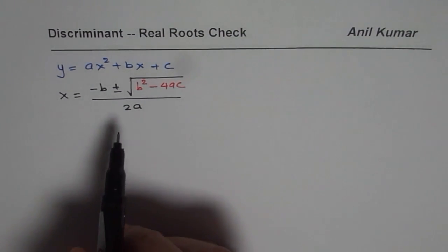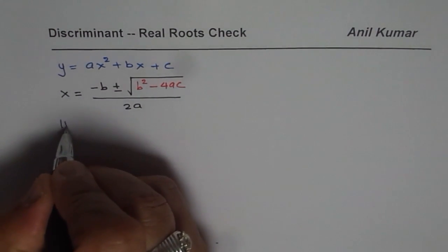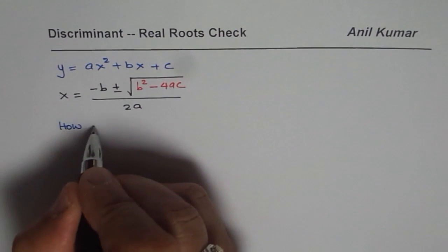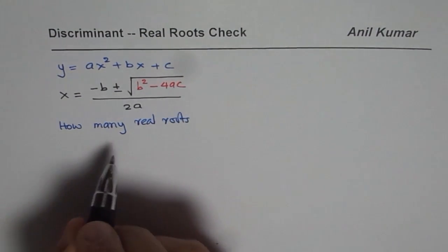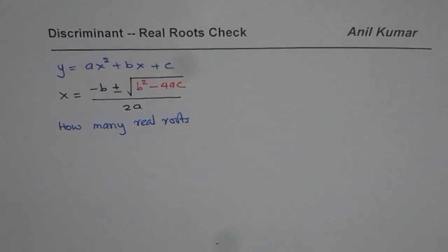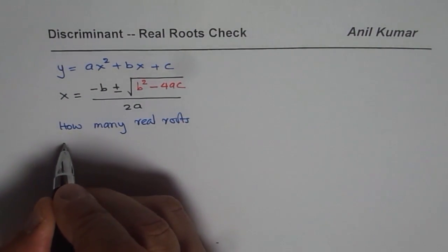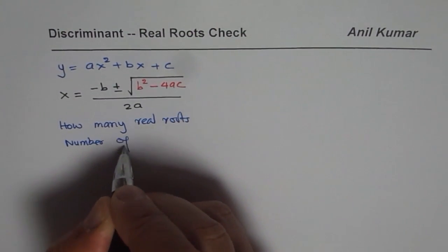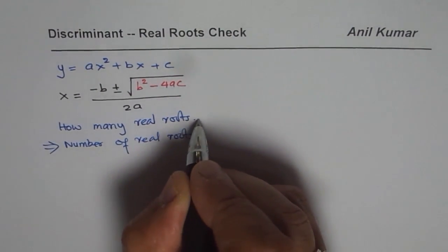Now the question is: how many real roots will a quadratic equation have? When the question is about how many real roots, we do not need to actually find the roots. We only need to answer whether the number of real roots is 0, 1, or 2. We are interested in the count of real roots, not their values.